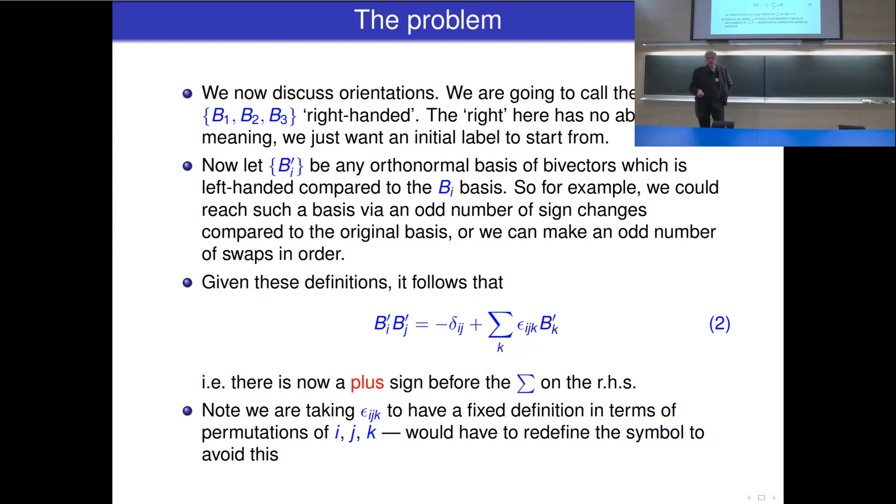Now, as an example of how we end up with a plus sign there, you can consider the change in orientation induced by taking b i dashed is just minus b i. That's a very simple thing to do. That will flip the orientation because there's three of them. And if we go back to equation 1, you can see if I flip each of the b's, then I get no sign change on this side, but I do get a sign change just here because there's only one b. And that's how you end up with a plus just there.